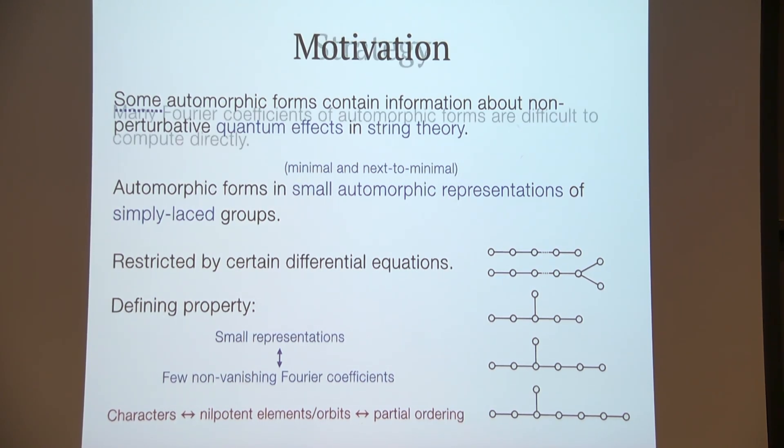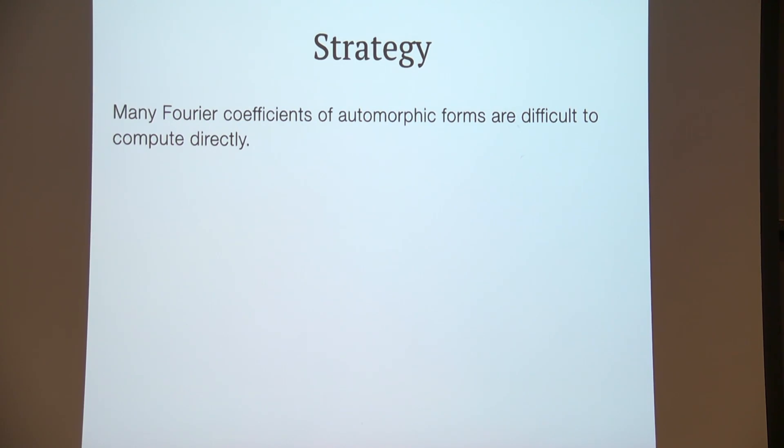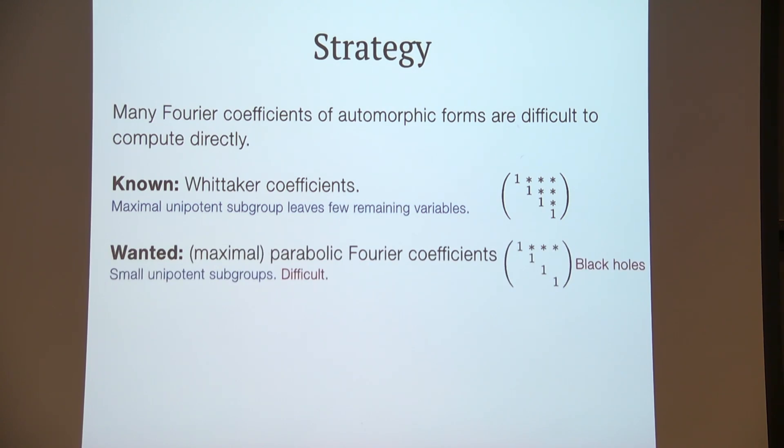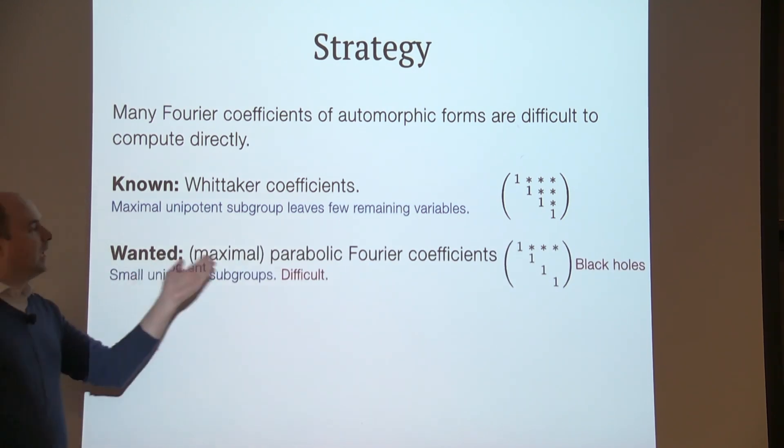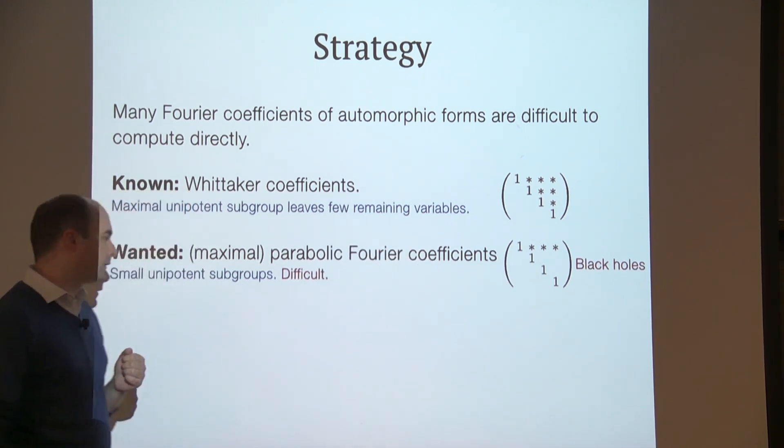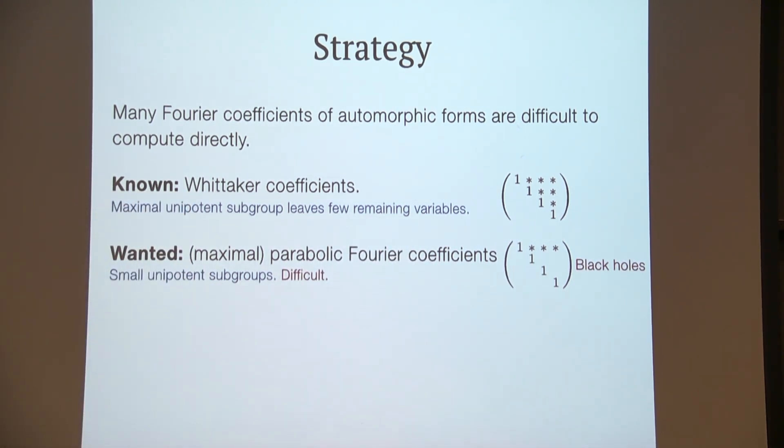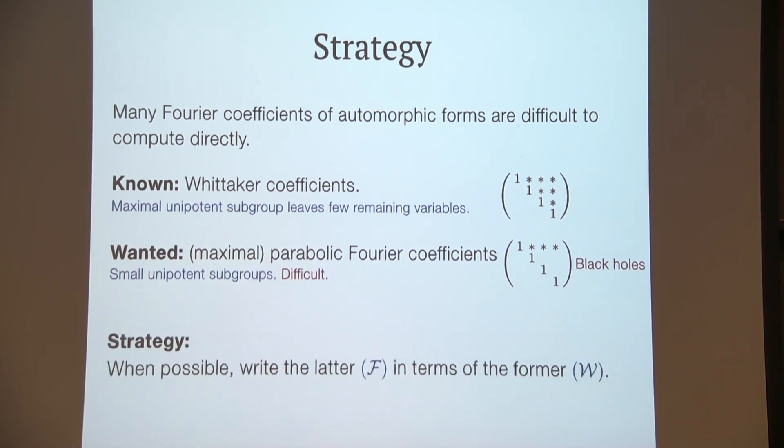So many of these Fourier coefficients of automorphic forms are difficult to compute directly—just taking the integral. We do know how to compute the special kinds, the Whittaker coefficients on the whole of N, the upper triangular matrices, for example. But what we want to compute are these maximal parabolic Fourier coefficients, which have information, for example, about black holes. And this is very difficult. So the strategy is, when possible, to write the Fourier coefficient we want to compute in terms of the known ones, the Whittaker coefficients.